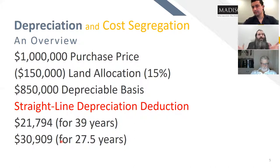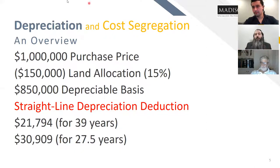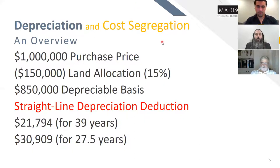By front-loading 25% of $850,000, that's close to $200,000 providing an additional $25,000 per year of depreciation deductions, which reduces your net taxable income almost entirely to zero. There's also bonus depreciation, which allows you to front-load the entire amount in one year — putting cost segregation on steroids, so to speak. We'll get to that shortly.